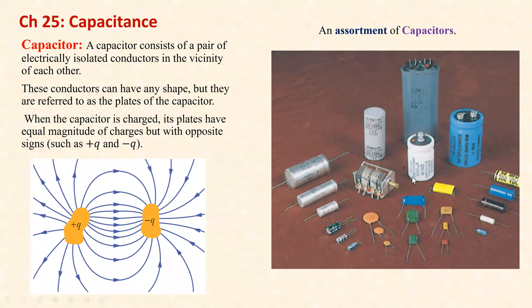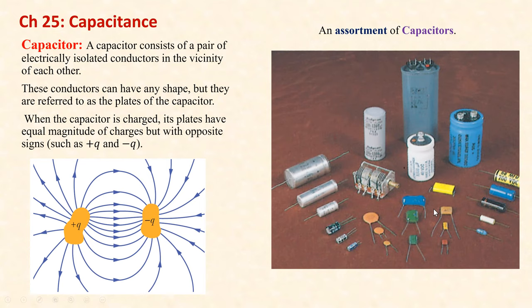This is a variable capacitor used in traditional radios. When you tune a radio, you turn a knob that changes the capacitance. Changing the capacitance changes the resonant frequency of the circuit, which is why you tune to a particular radio station — the circuitry resonates with that frequency. Now of course capacitors are much more delicate and small, but the basic concepts still apply everywhere.